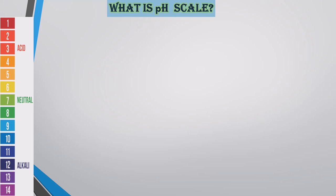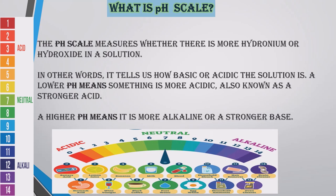What is pH scale? A pH scale is simply a scale which helps us determine the amount of hydronium or hydroxide in a solution. In other words, it tells us how basic or acidic the solution is. A lower pH means something is more acidic, also known as a stronger acid. A higher pH means it is more alkaline or a stronger base. You can see a pH scale in the picture below with a typical range.